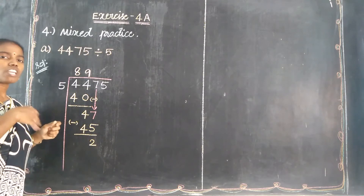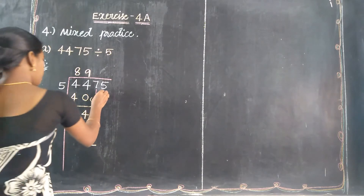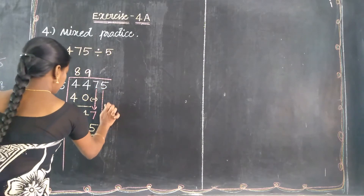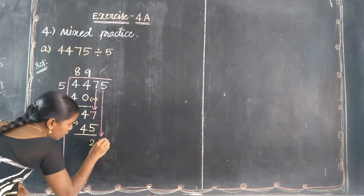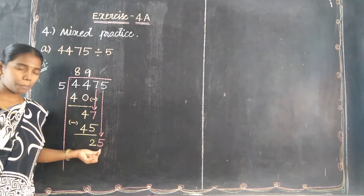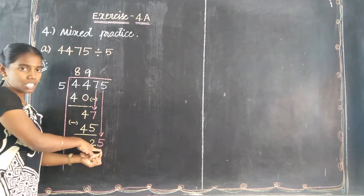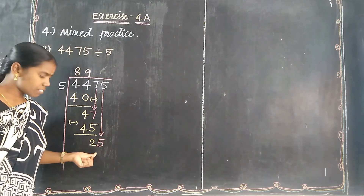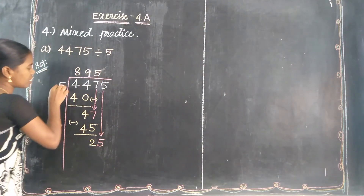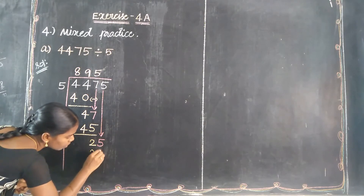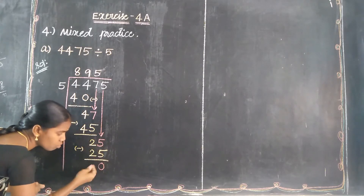Listen, students: the last digit is 5 or 0, which means it is divisible by 5. The number is 25, so check the 5 times table: 5 × 5 = 25. It is exactly divisible. 25 minus 25 = 0, so the remainder is 0.